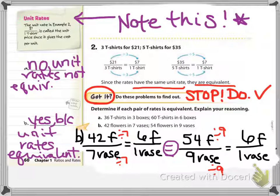All right, you can see here with question B, simplifying 42 flowers and 7 vases, that that comes to a unit rate of 6 flowers per vase. 54 flowers per 9 vases also simplifies down to 6 flowers per vase.